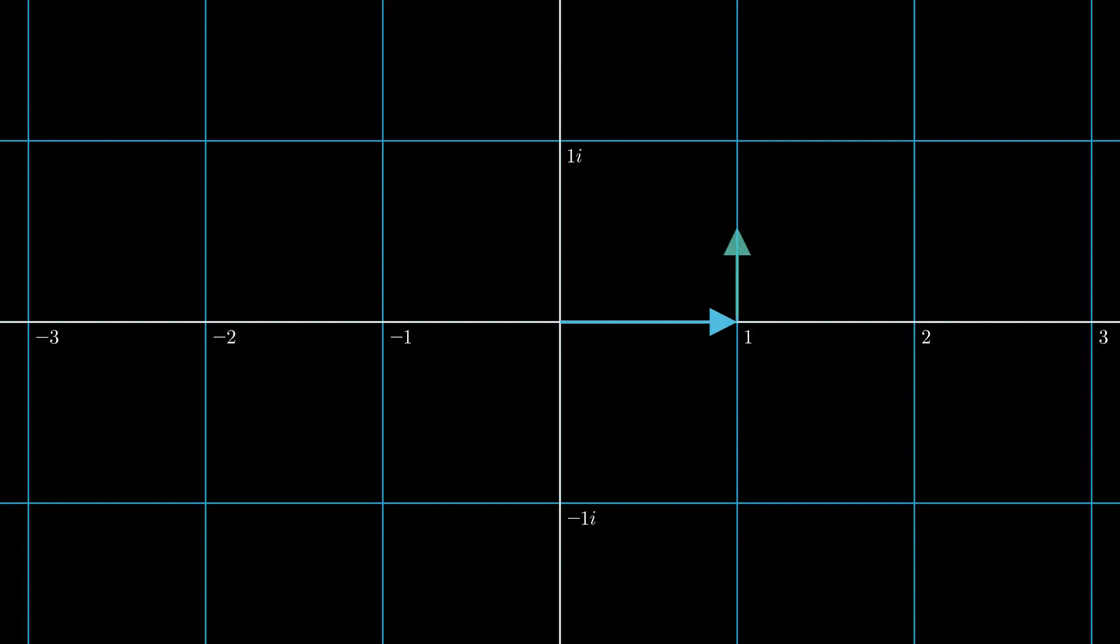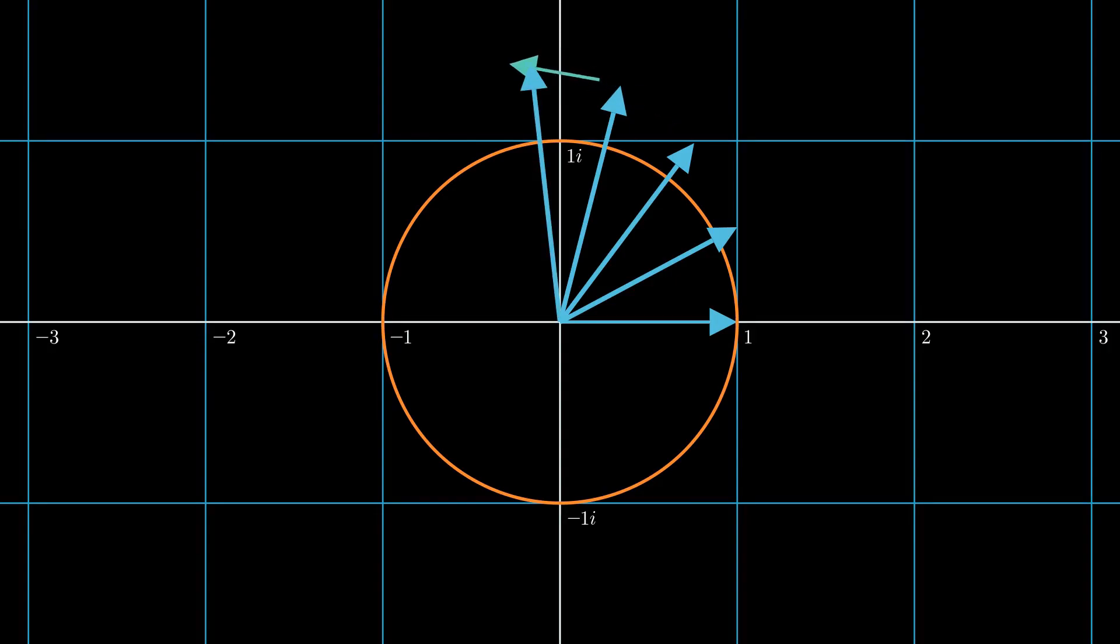The evolved state is simply the vector sum of the green dragger and the original state, which is blue. This changes the length of the state, and it is also non-continuous, which breaks two out of three rules we mentioned at the start. This orange unit circle is there for reference. As you can see, the blue quantum state vector gradually grows out of the circle as it evolves.